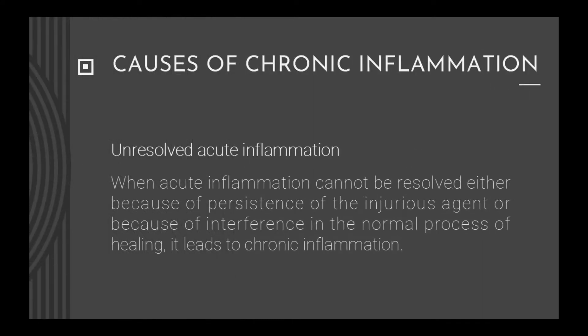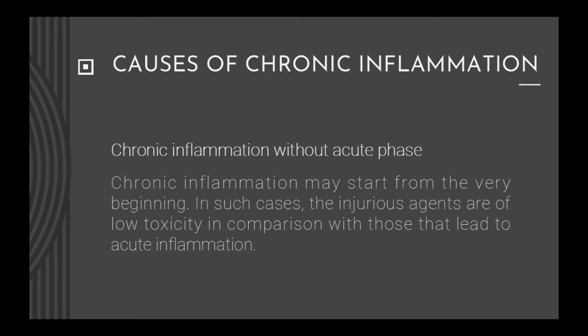Causes of chronic inflammation. First, unresolved acute inflammation: when acute inflammation cannot be resolved either because of the persistence of the injurious agent or because of interference in the normal process of healing, it leads to chronic inflammation. Second, chronic inflammation without acute phase: chronic inflammation may start from the very beginning; in such cases the injurious agents are of low toxicity in comparison with those that lead to acute inflammation.